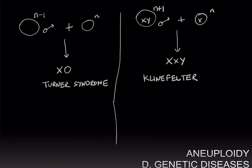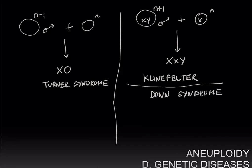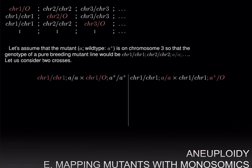Another well-known trisomic condition is Down syndrome, or trisomy 21, where non-disjunction involving chromosome 21 causes individuals to have three copies of chromosome 21.